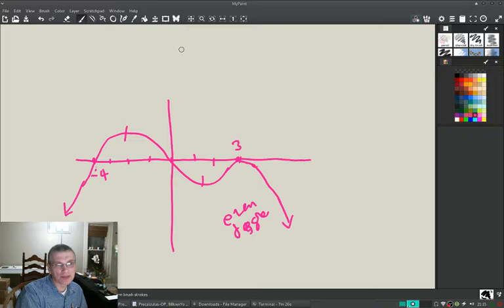And how many times does it turn? Let's see, it turns one, two, three times. So for something to turn three times, it has to be at least degree three plus one, or four.